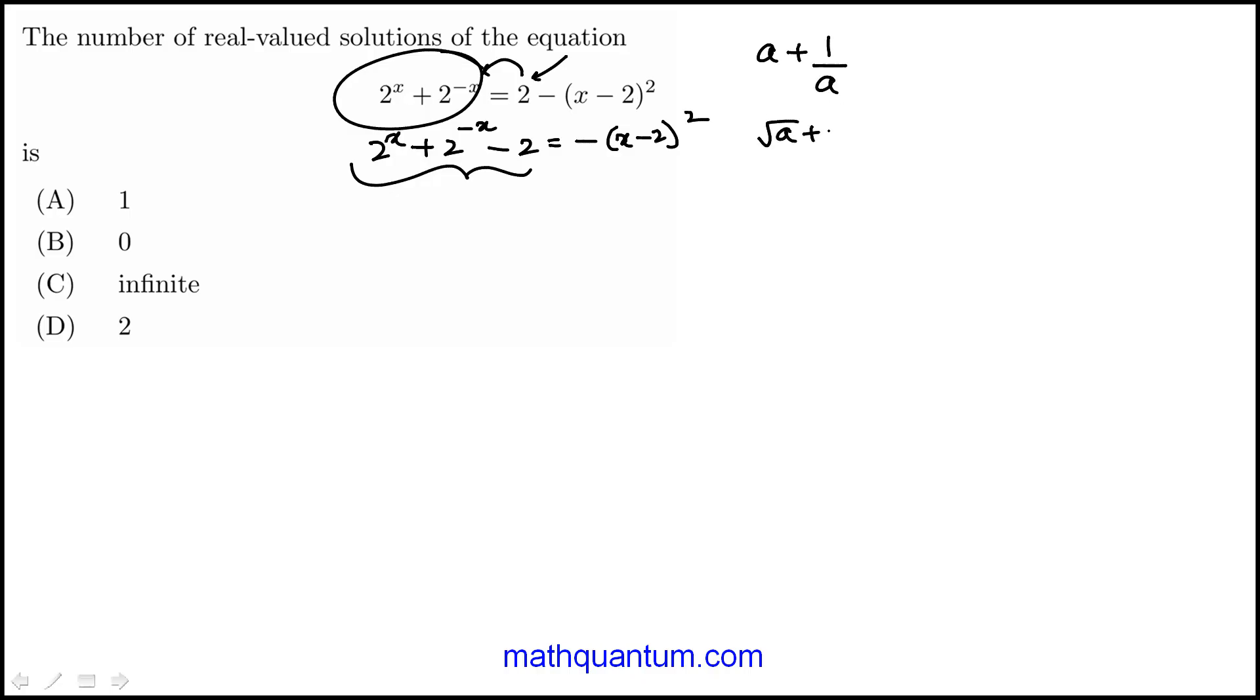We can also think of it as square root of a plus 1 over square root of a, because when you square that you will get a plus 1 over a plus 2, because when you multiply these twice.